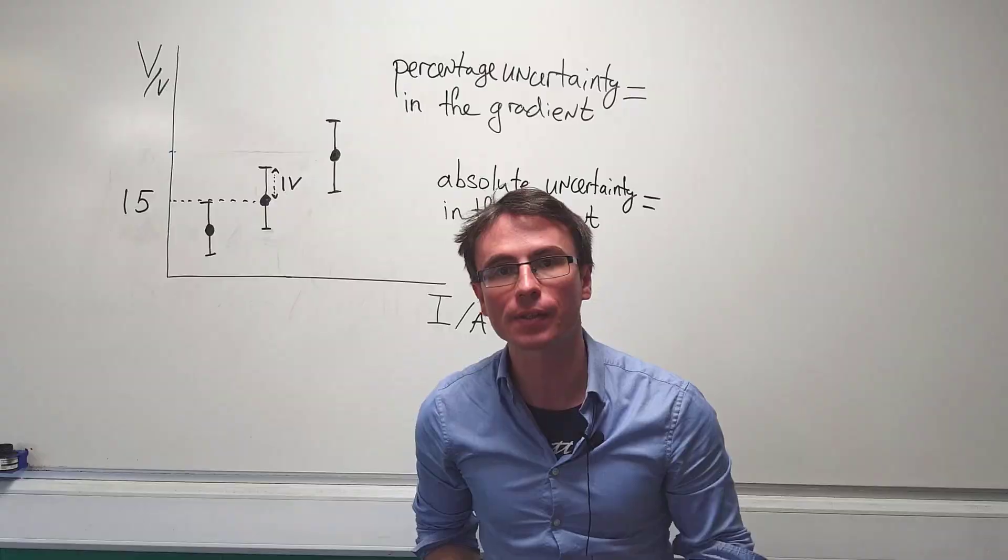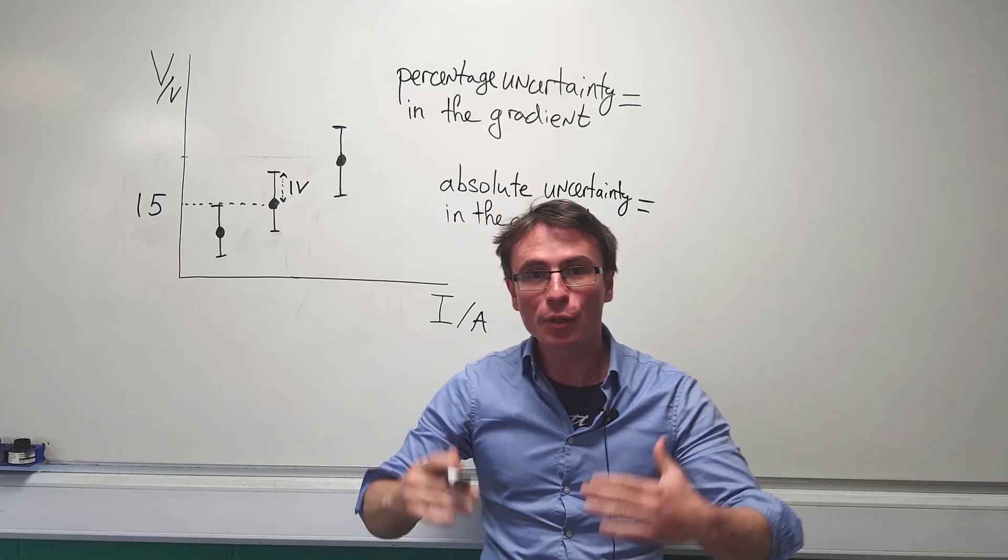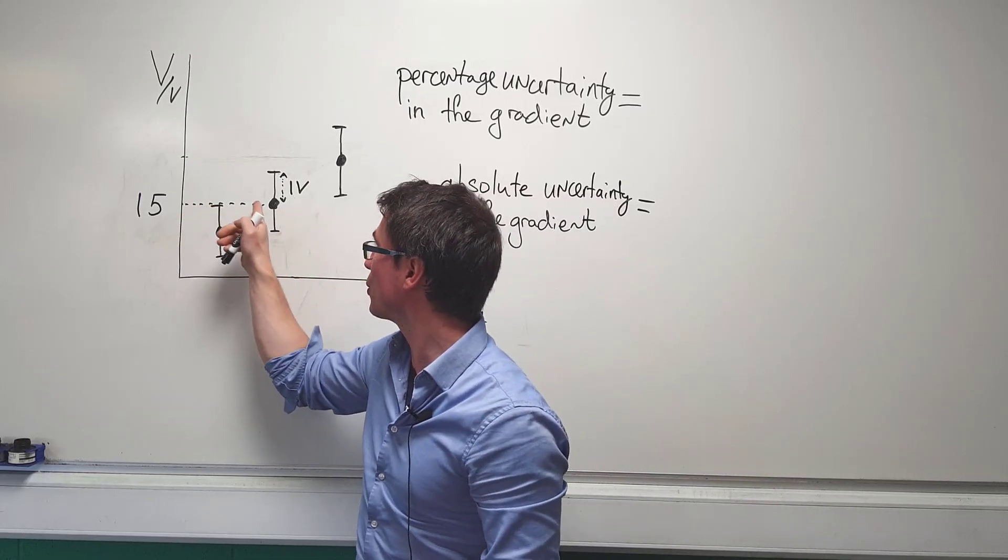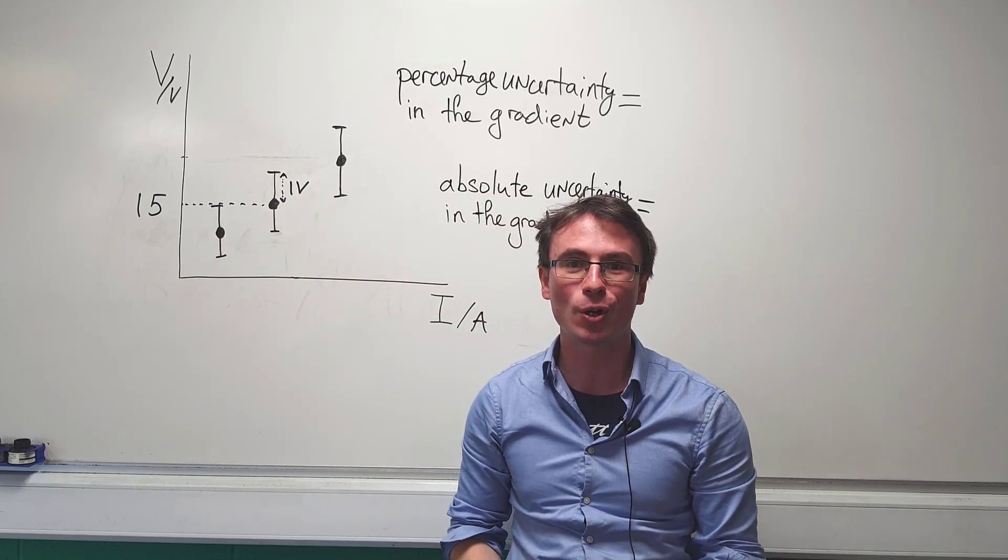Notice that we have some error bars. Remember the length of an error bar is twice the absolute uncertainty. So this means that the value of this point is somewhere between 16 and 14 volts.